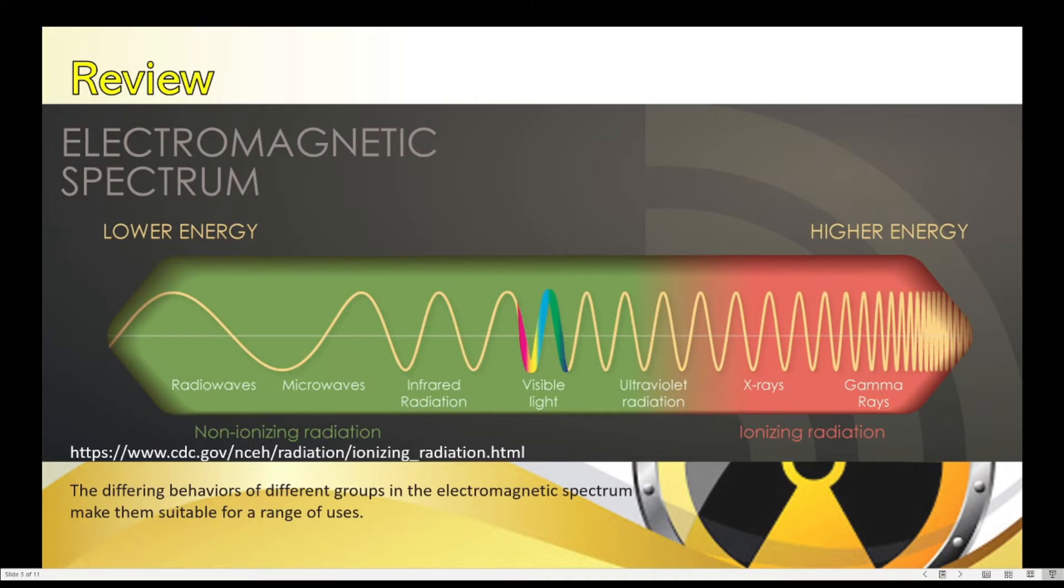Among the four, visible light would have the longest wavelength and gamma rays would have the highest frequency. Also, in this diagram,